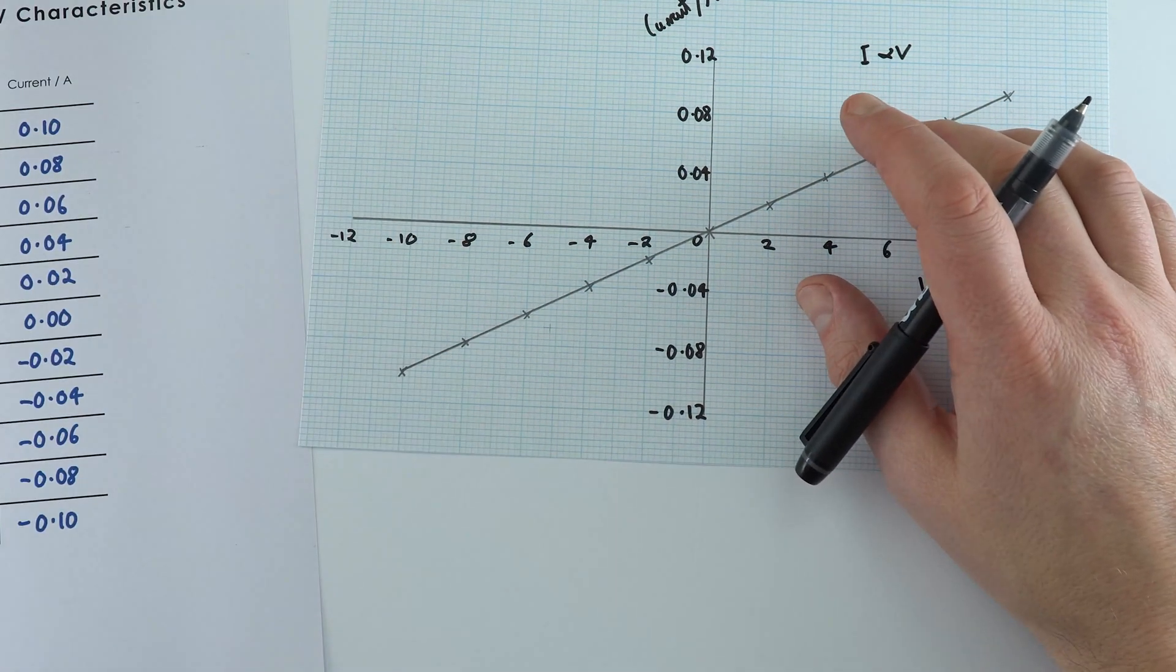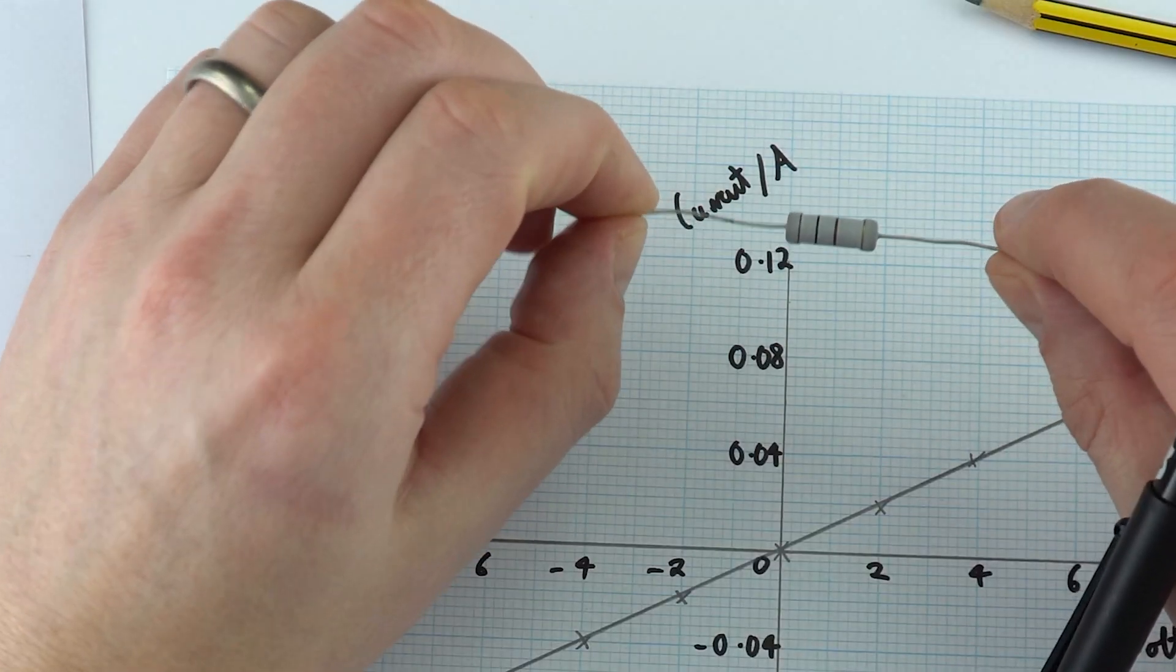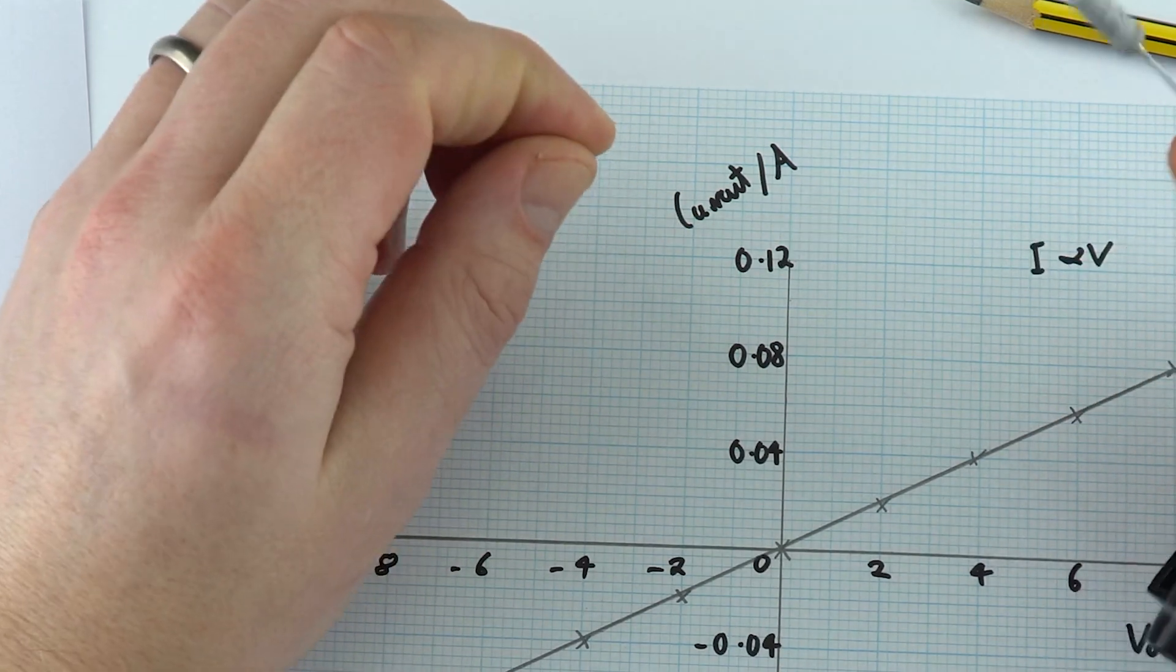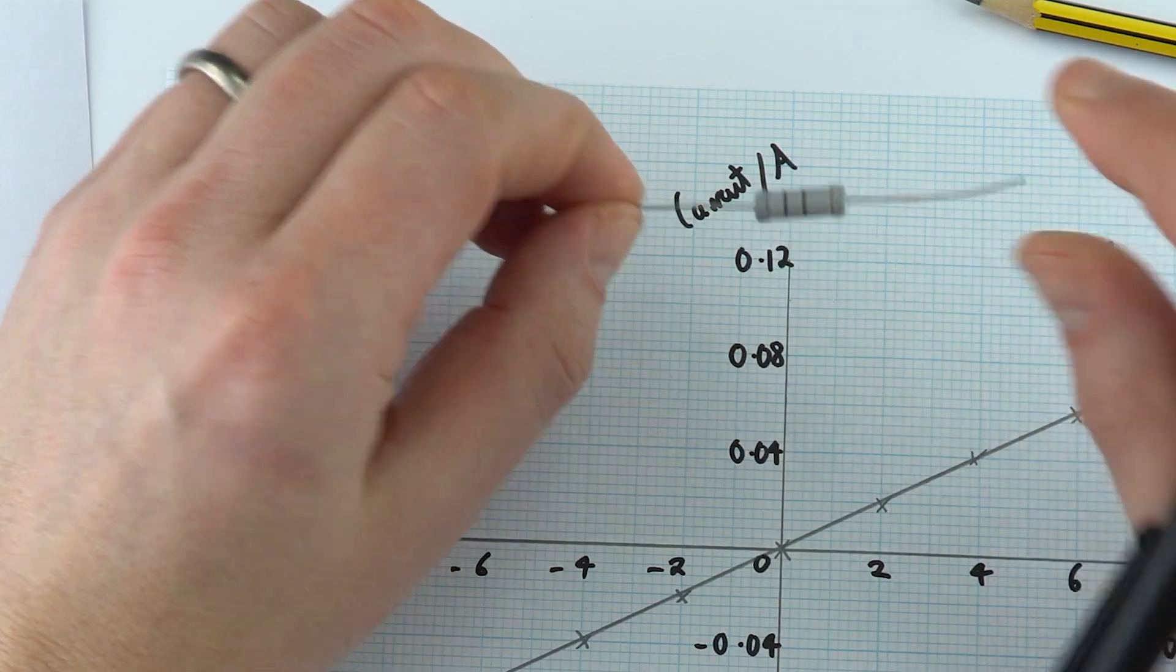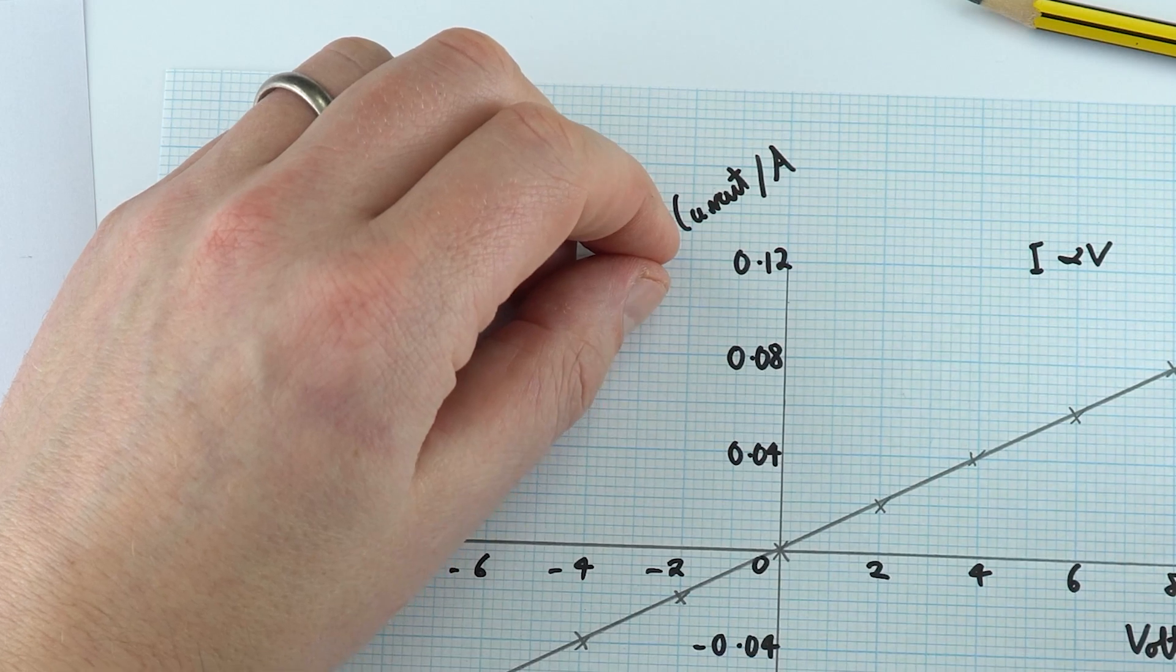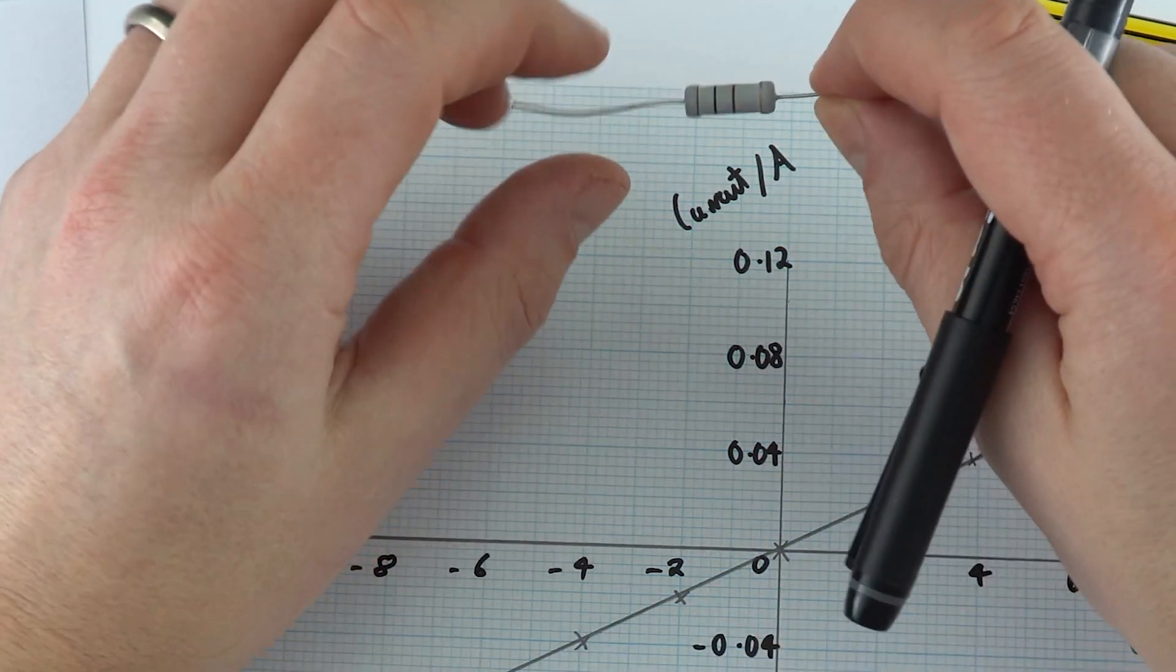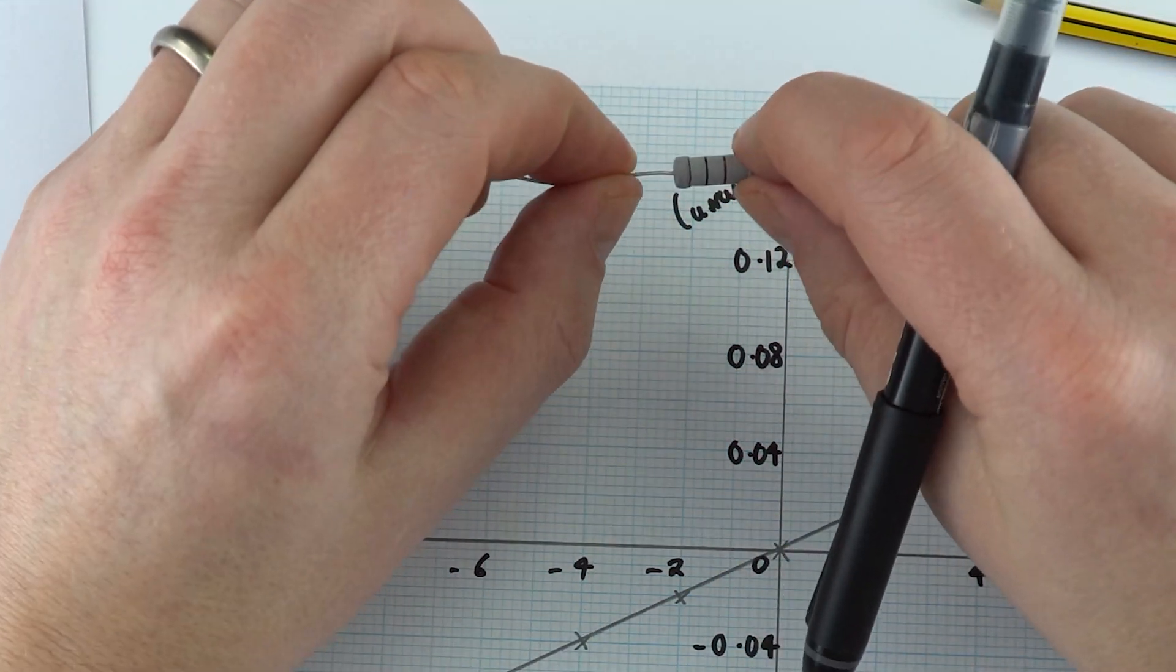The reason for that is this resistor has a fixed resistance. This one is actually 100 Ohms, and it's always going to be 100 Ohms. It doesn't matter if we've got 8 volts or minus 6 volts, this will always have the same resistance.